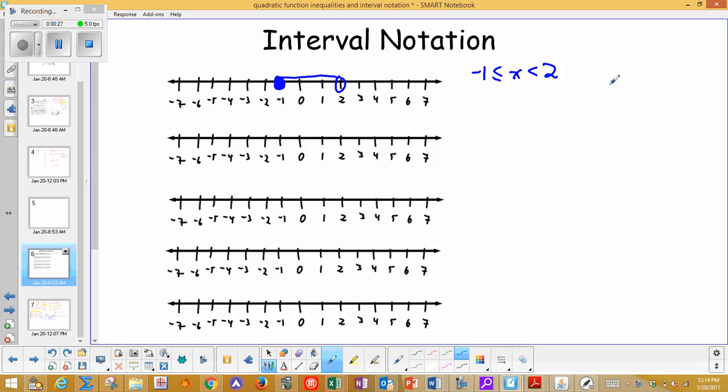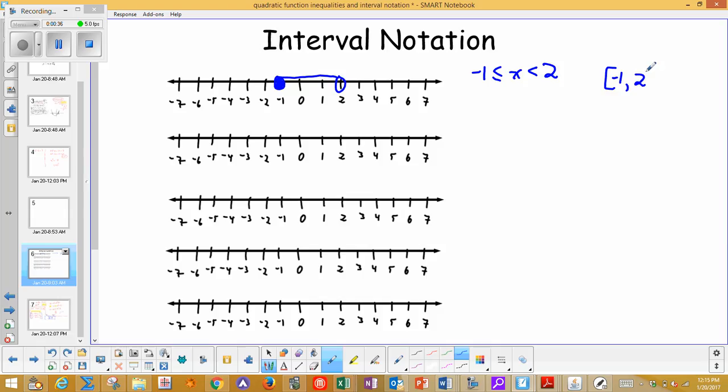Interval notation lets me write it this way. So I put, I use parentheses, but I'm actually using a bracket because I include negative 1 all the way to 2, but I don't include 2. So this, and this, and this all mean the same thing. It's just a shorter way of saying it. So this is a notation, it's not something to figure out, it's just a notation.